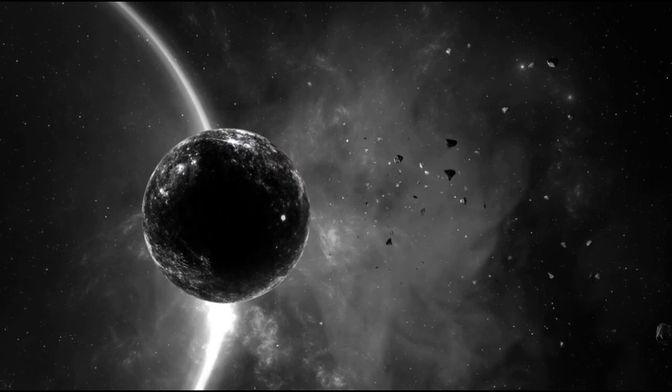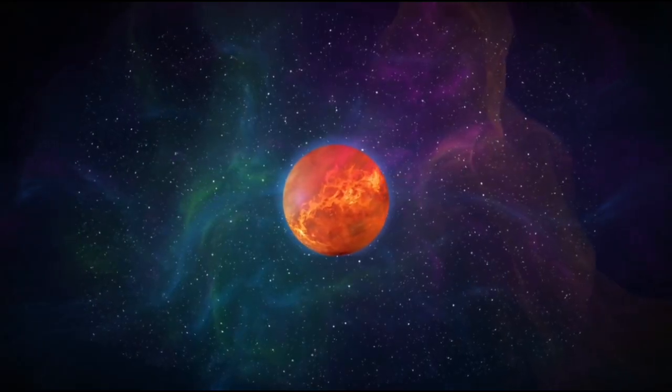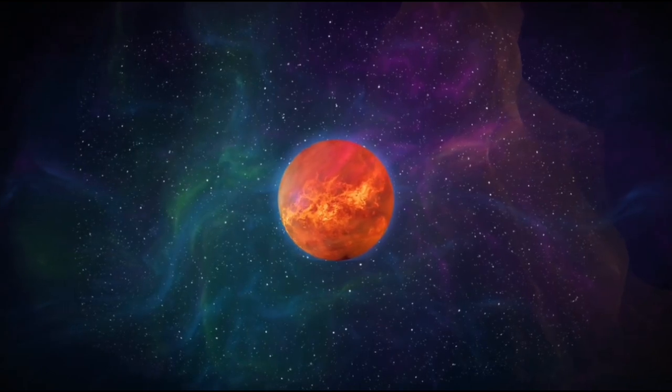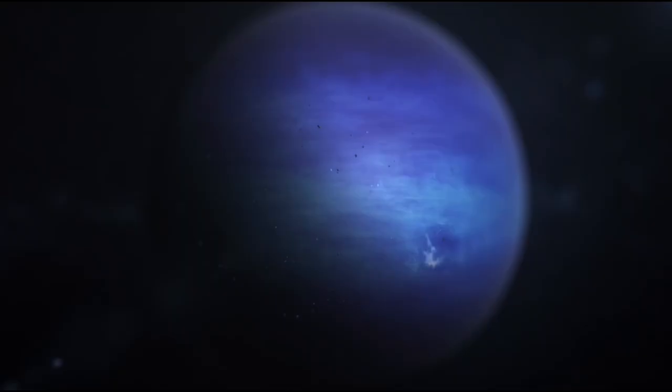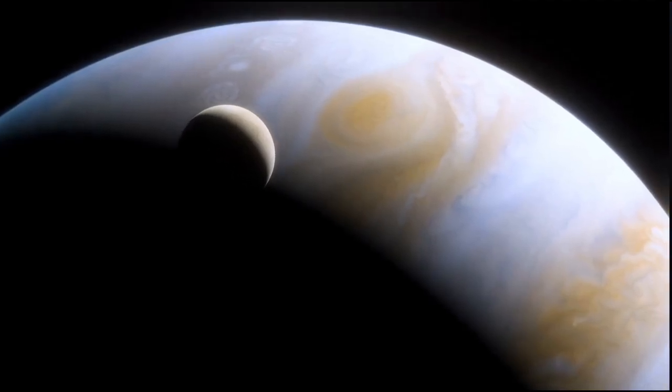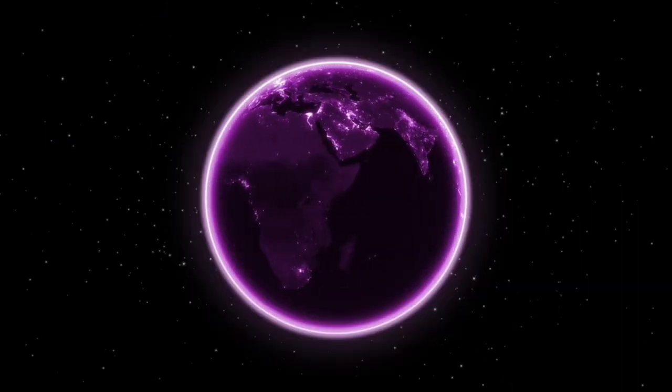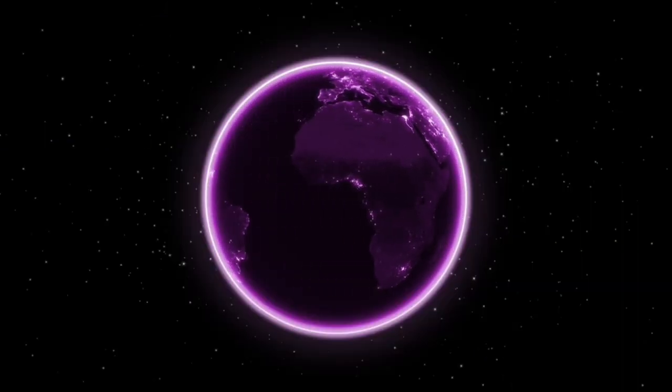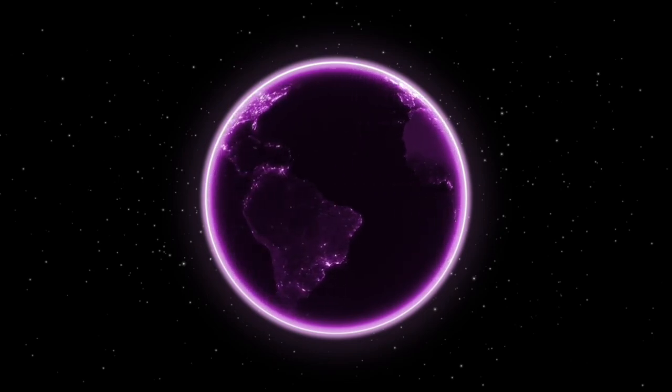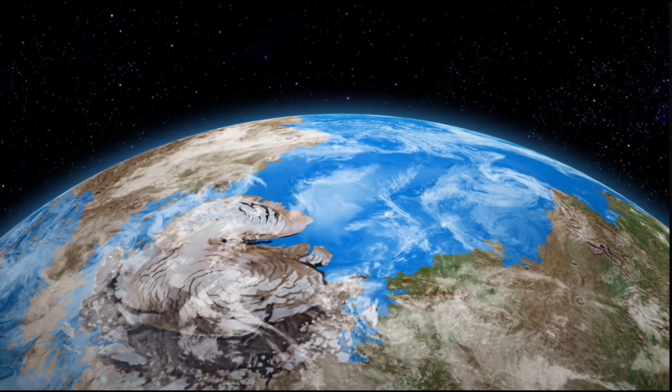Interestingly, the planet's tidally locked state might offer a degree of protection. While one hemisphere constantly faces the star's intense radiation, the dark side could act as a sanctuary. Subsurface environments or deep caves might shield life forms from radiation, providing a stable habitat. Additionally, if Proxima b contains underground oceans, they might harbor life in a more temperate, radiation-free setting, much like ecosystems found near hydrothermal vents on Earth.